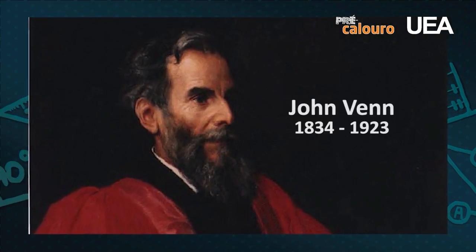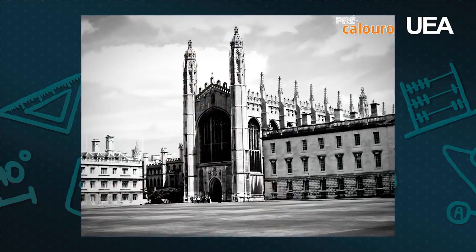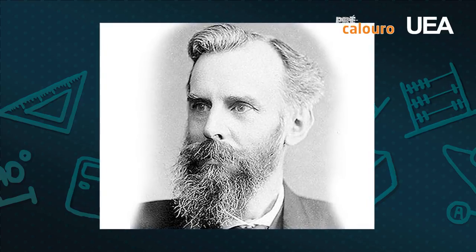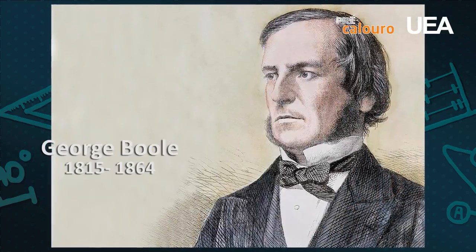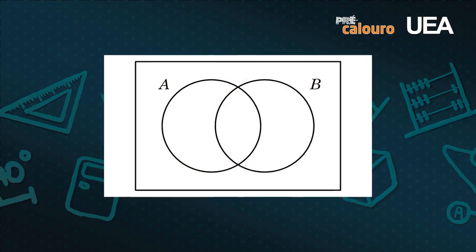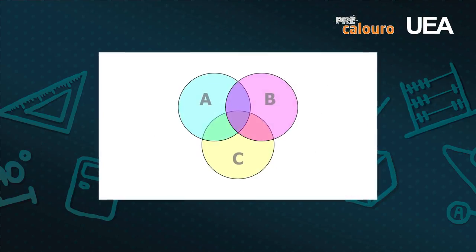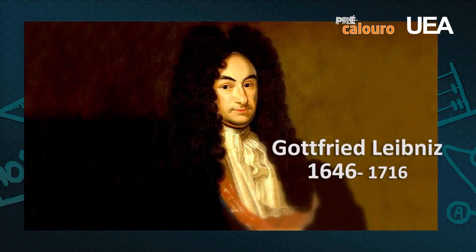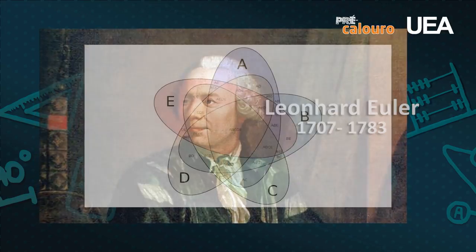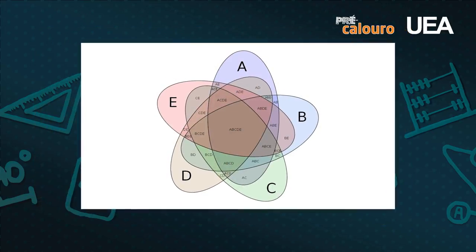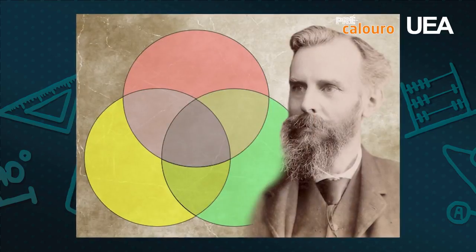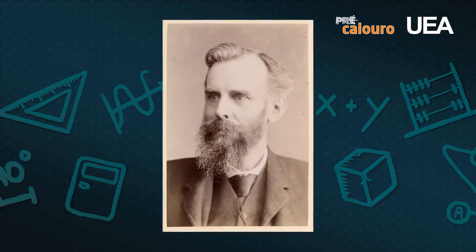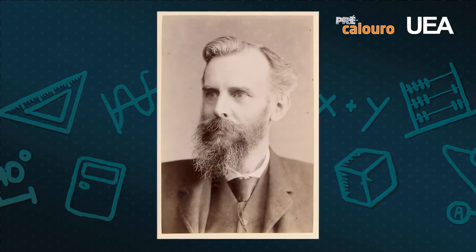John Venn, matemático britânico, graduou-se na Universidade de Cambridge, onde mais tarde ensinou lógica e teoria da probabilidade. Desenvolveu e ampliou a lógica matemática de George Boole, tornando-se conhecido pelos seus diagramas para representar uniões e interseções entre conjuntos, ampliando o que havia sido desenvolvido por Leibniz e Euler. A partir da década de 1960, o estudo do diagrama de Venn foi iniciado no ensino escolar de matemática, na teoria dos conjuntos e de funções, integrando o chamado movimento da matemática moderna.